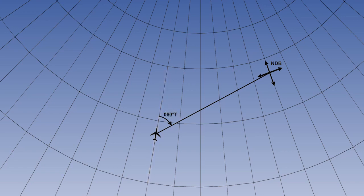In this example, it is zero, six, zero, true. We will then need to add 180 degrees to get a bearing of 240 degrees to plot from the ground station.